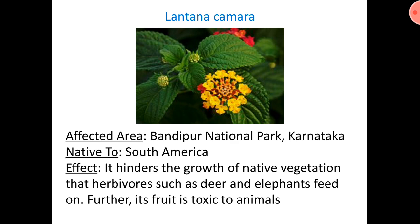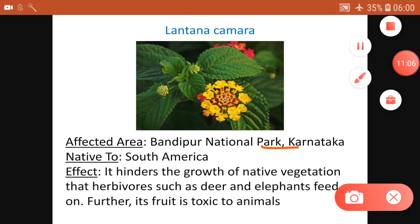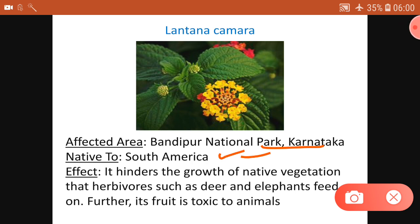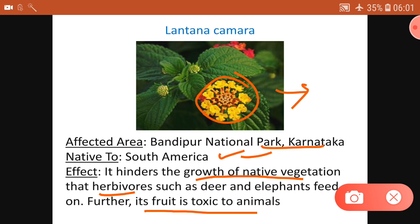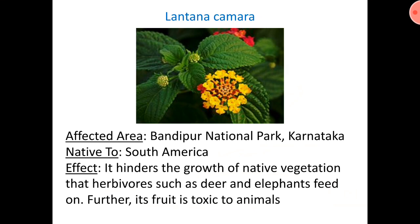Lantana camara is affecting Bandipur National Park in Karnataka. It is native to South America but is now present in Bandipur. It hinders the growth of native vegetation, and herbivores like deer and elephants depend on that native vegetation. Because Lantana spreads widely and its fruits are toxic to animals, elephants, deer, and other herbivores are not finding their food and are getting affected in two ways.